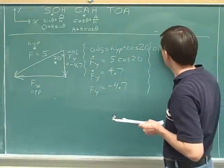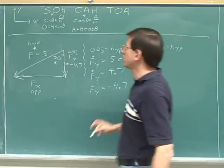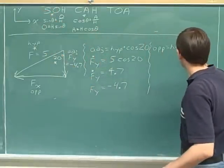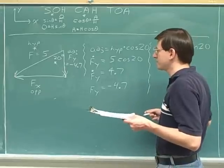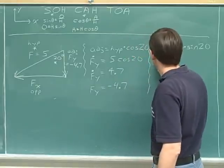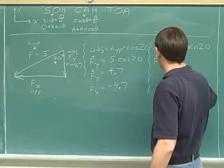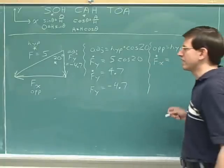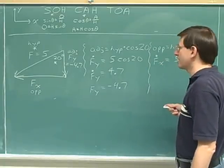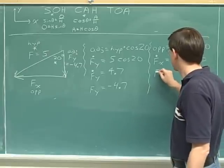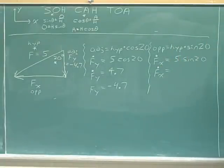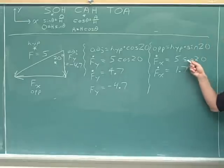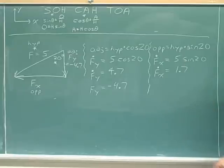Now on to the opposite side. To get the opposite side, we use the sine of the angle, which was 20°. The opposite side is f_x; since we're doing trig, we use the magnitude of f_x. The hypotenuse has a length of 5, so the magnitude of f_x equals 5 times sine 20° = 1.7. You can do this in one step on your calculator: just type 5 times sine 20 and press enter.